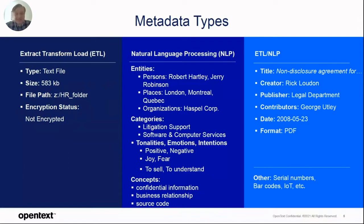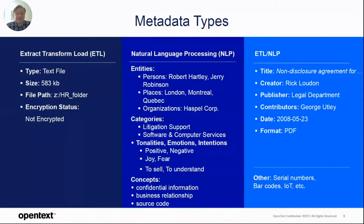For example: is it positive or negative? This could apply to each sentence within a conversation or an email. Is there any emotion? Is there any intention — things like to sell, to buy, to understand — that could be identified within those documents. Then we have metadata we call concepts: nominal phrases, verbal phrases, tokens found within the documents. All of this can be combined with ETL and NLP to get other metadata types such as title or the name of the creator or publisher.